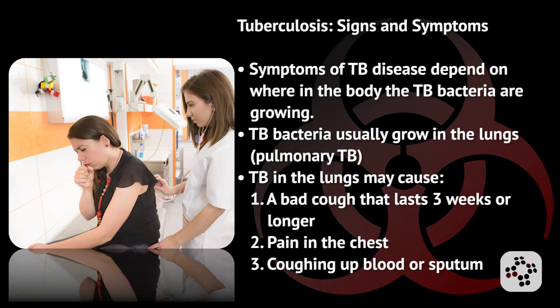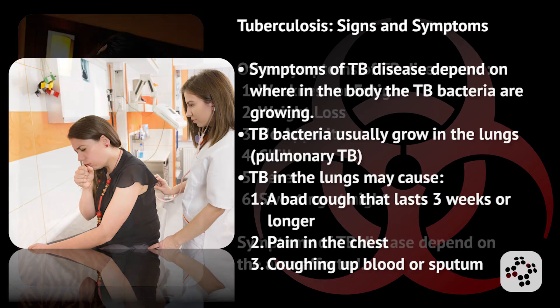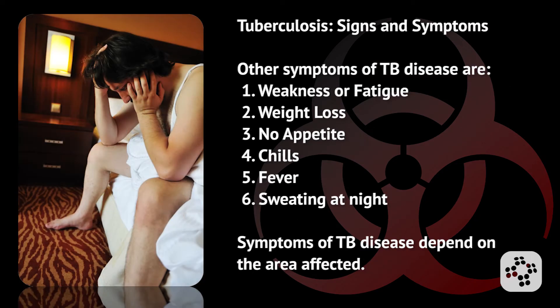TB disease in the lungs may cause symptoms such as a bad cough that lasts three weeks or longer, pain in the chest, and coughing up blood or sputum — phlegm from deep inside the lungs. Other symptoms of TB disease could include weakness or fatigue, weight loss, no appetite, chills, fever, or sweating at night.